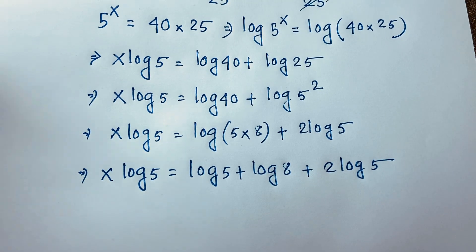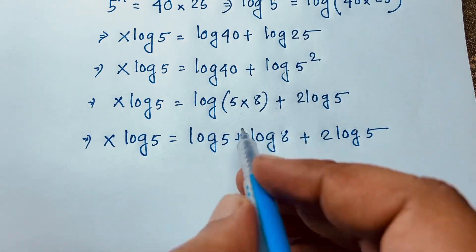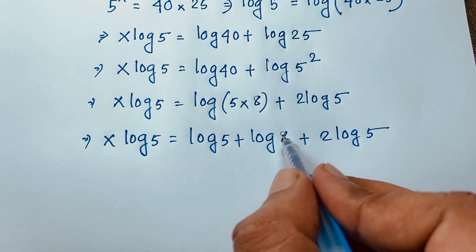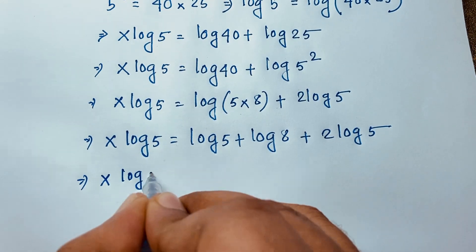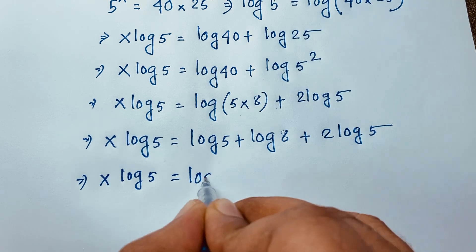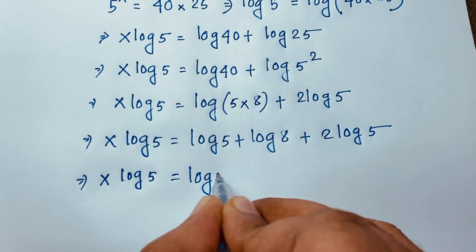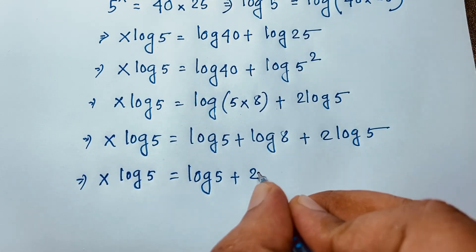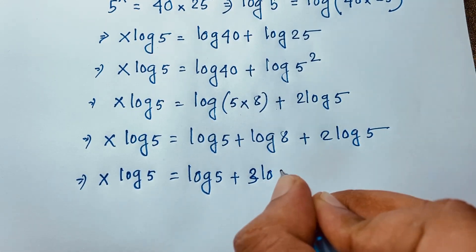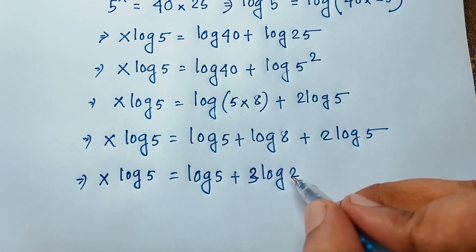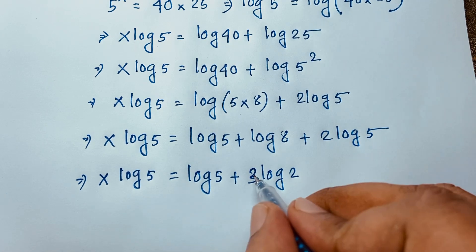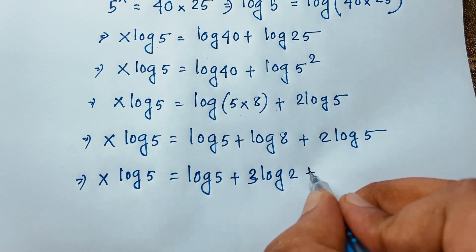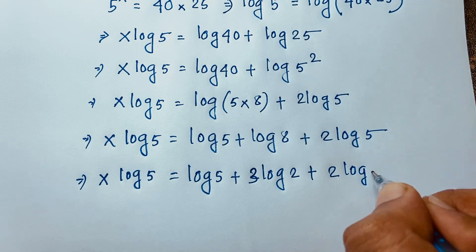Now 8 is equal to 2 to the power 3, so log 8 equals 3 log 2. Substituting this in, x log 5 is equal to log 5 plus 3 log 2 plus 2 log 5.